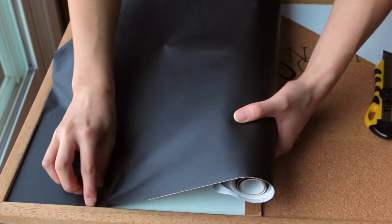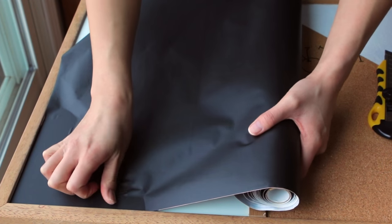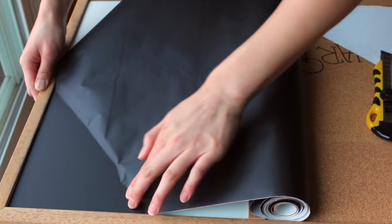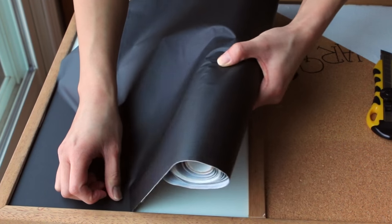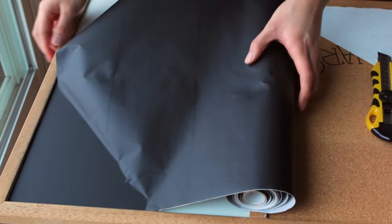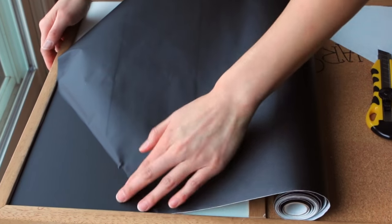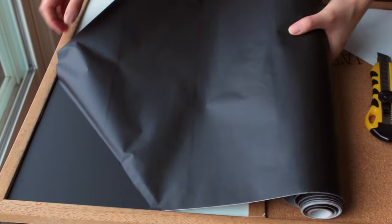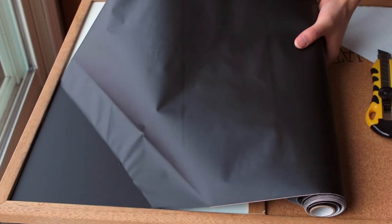So with applying any type of contact paper, it's always very important to remember to work in very small sections at a time. Especially if you have a greater surface area, make sure that you're peeling off the backing as you go. Because what happens if you peel off the whole thing at once, you're going to get it stuck everywhere and you're going to be left with a big bumpy mess.